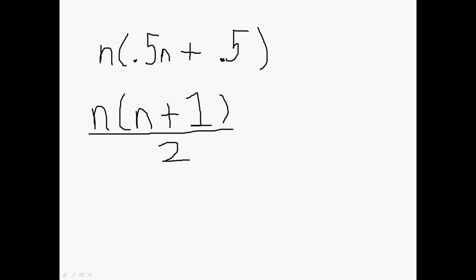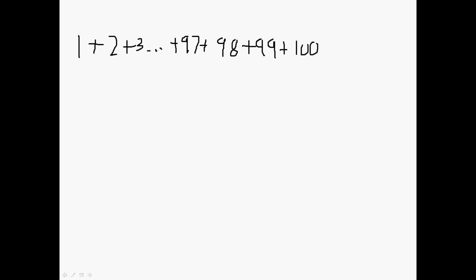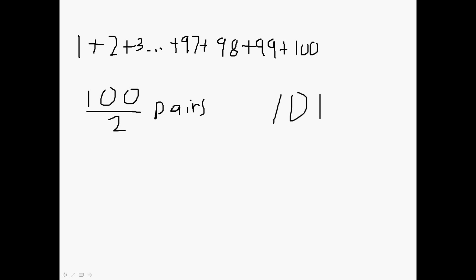However, the way it was originally discovered — or one of the ways, at least by Gauss — was that if you have 100 numbers you wanted to add up, that means you have 100 over 2 pairs that add up to 101. One plus 100 is 101, two plus 99 is 101, and you just keep going until you get 50 plus 51. So you have 100 over 2 pairs that add up to 101.